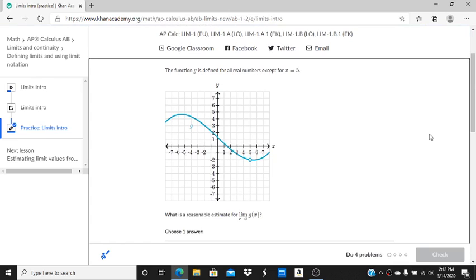So we have a function g, it's defined for all real numbers except for x equals 5. And I want to say, what is a reasonable estimate for the limit as x approaches 5 of g of x?